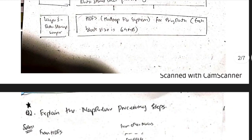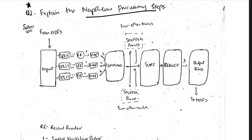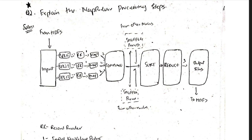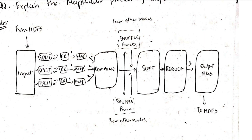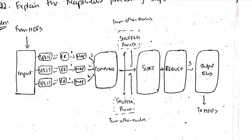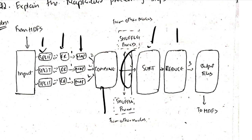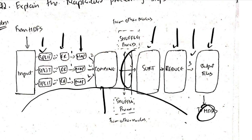The MapReduce processing step is the most repeated question in this topic. You have to draw the diagram and mention what's happening step by step. Steps include: fetching raw data from HDFS as input, then key-value pair splitting, reading the record, mapping, combining, shuffling, sorting, reducing, and finally storing the output back to HDFS.